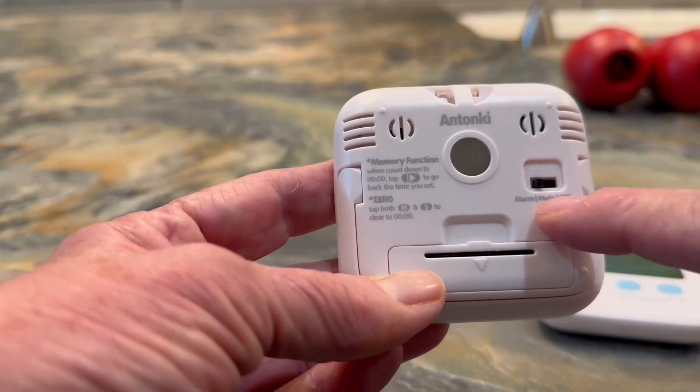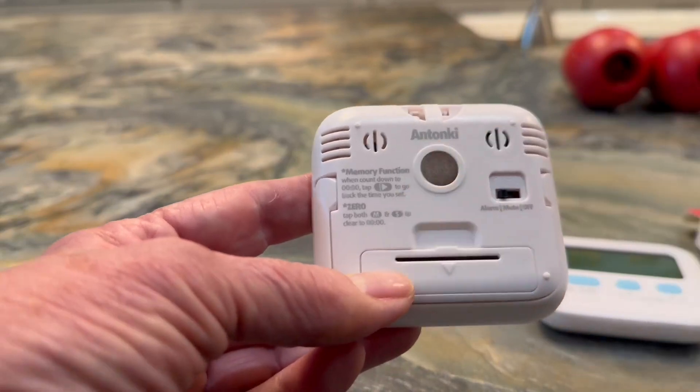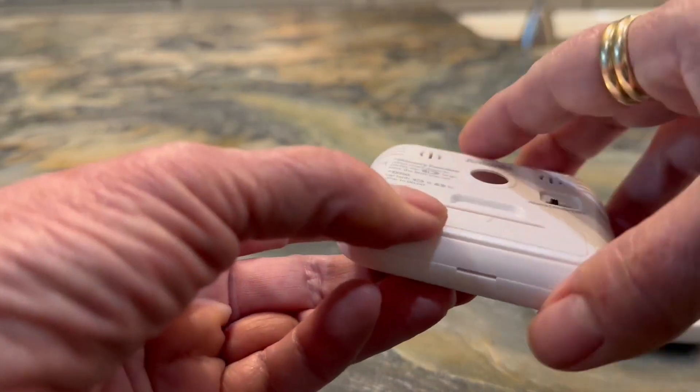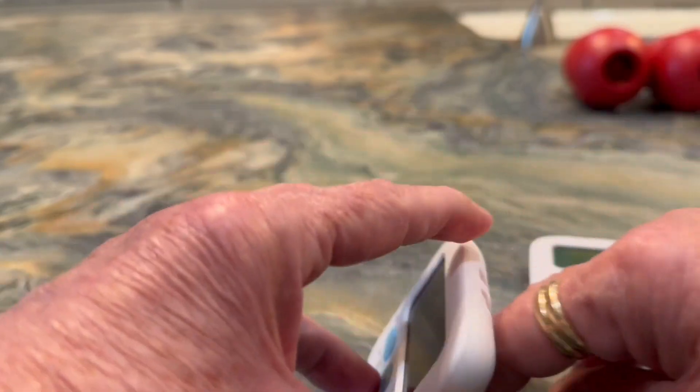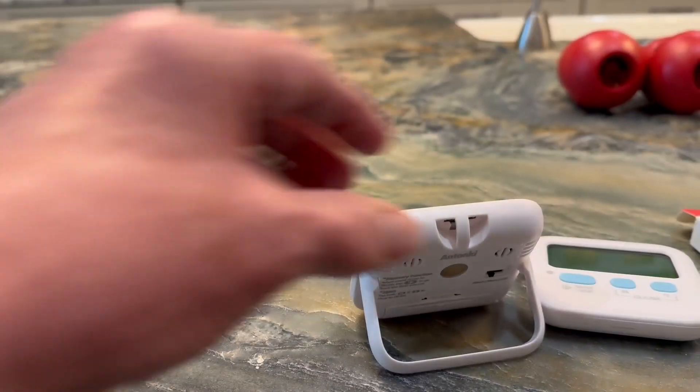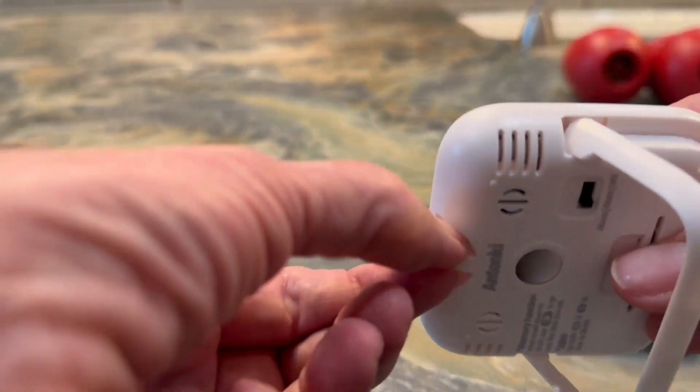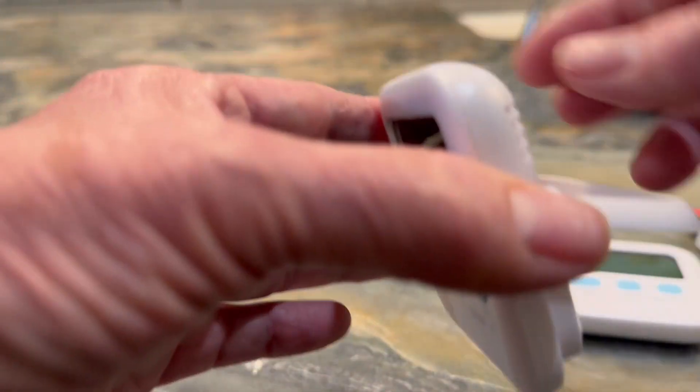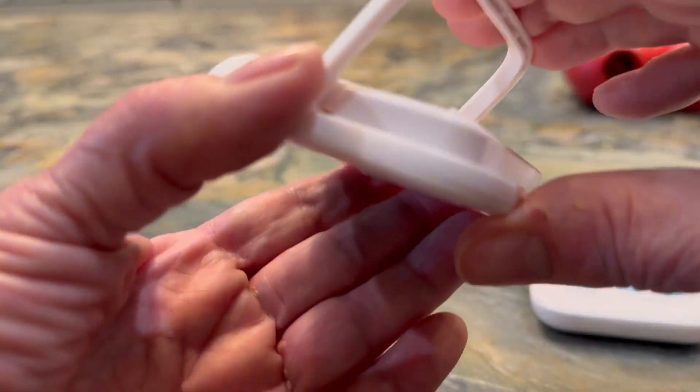Right here it tells you the alarm, the mute, on, and off. This is a magnet right here so you can put it on a refrigerator. The other cool thing is down here—a hidden little stand so you can make it stand just like that. It also has a looped area right here so you can attach a hook and wear it around your neck when using it with your kids.